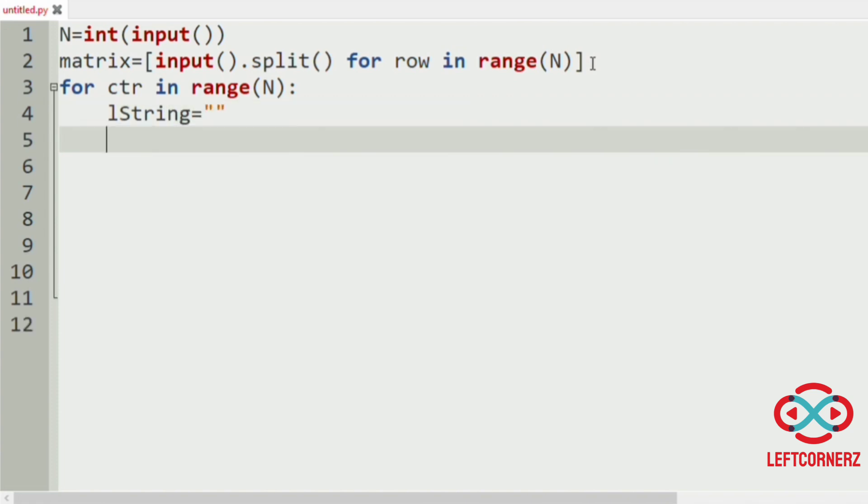Now we have to print the first half of the L string, that is the vertical column by using a for row in range. The starting index is 0 and the ending index would be N minus counter.